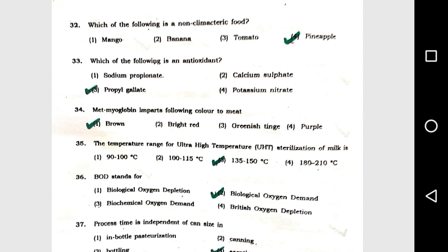Question number 35: The temperature range for ultra high temperature (UHT) sterilization of milk is option 3, 135 to 150 degrees Celsius. Question number 36: BOD stands for biological oxygen demand.